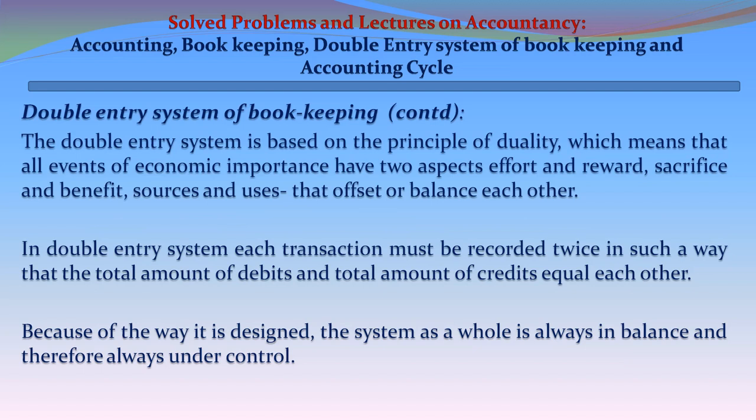In the double-entry system, each transaction must be recorded twice in such a way that the total amount of debits and the total amount of credits equal each other. Because of the way it is designed, the system as a whole is always in balance and therefore always under control.